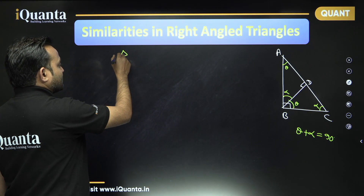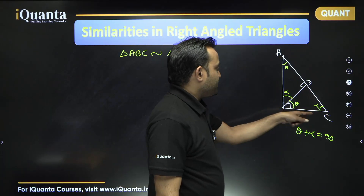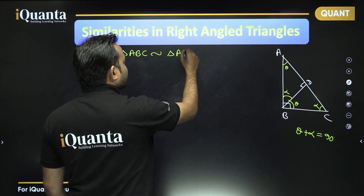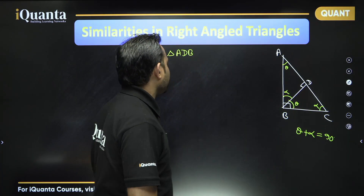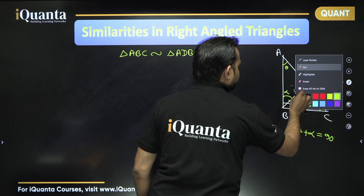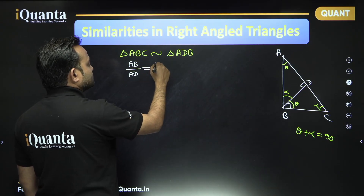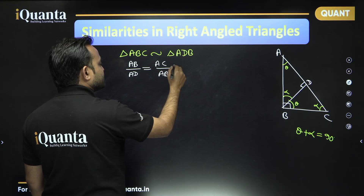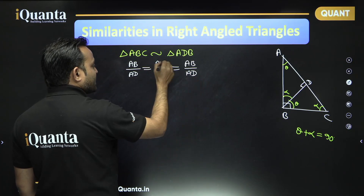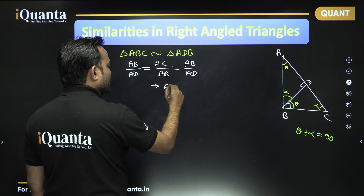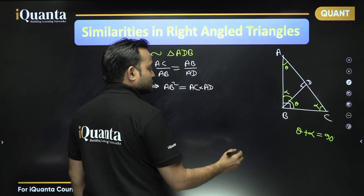Can we say triangle ABC will be similar to triangle ADB? Here angle B is 90 degrees. So triangle ABC is similar to triangle ADB. The relation between side lengths gives us: AB upon AD is equal to AC upon AB, which is equal to BC upon BD. Taking these two together, we get AB squared is equal to AC into AD.